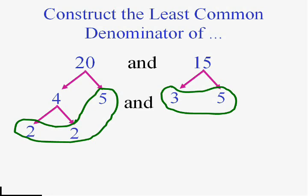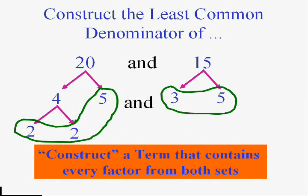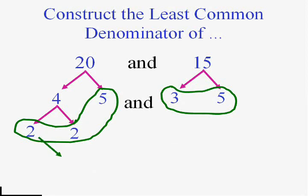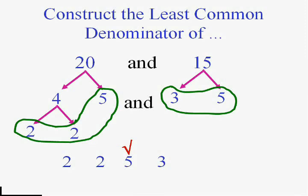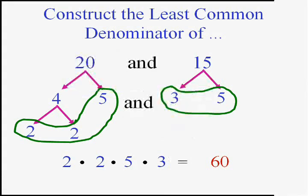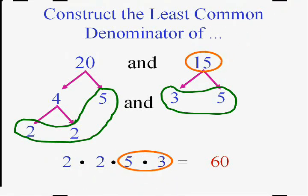Now I've got to make sure everybody's in this number, so it's time to construct the least common denominator. I'm going to put a 2 in — actually, I need two 2's. I'm going to put a 5 in. I've taken care of all the factors of 20. Now for 15: I need a 3. I need a 5, but I already have a 5, so I don't have to put another one in. I multiply what I have. 20 is in there, 15 is in there — they must both go into 60, and 60 is the smallest number they both go into. It's the least common multiple or least common denominator.